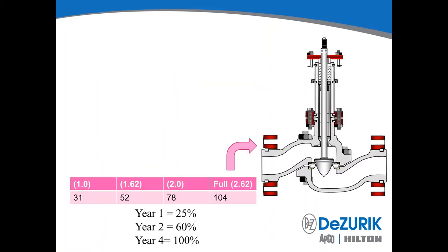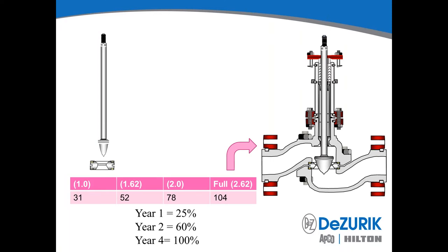Let's assume they did have globe control valves installed. That engineer would have gone to the providers and said year one we're going to be at 25%, year two at 60%, all the way through year four at 100%. Let's assume the control valves were sized with full area trims. I selected a 3-inch globe valve, and its full area trim is trim number 2.62 — that's the orifice size — which has a CV of about 104. At year one, the auxiliary steam would have required trim number 1.0, a full three-reduction trim set with a CV of 31.